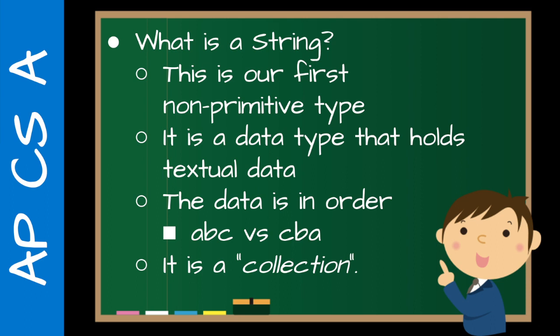Let students know it's a data type that holds textual data — like a first name or last name. The data is in order; there's a difference between A, B, C and C, B, A. Even though they have the same letters, they are different because of the different order. This is really where I start to introduce the idea of a collection. A string is our first kind of collection that we're looking at.